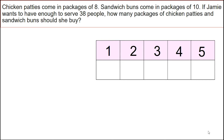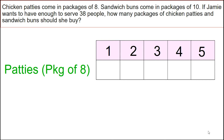Let's begin with the chicken patties, which come in packages of eight. Listing the multiples of eight: eight times one is eight, eight times two is 16, eight times three is 24, eight times four is 32, eight times five is 40.